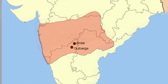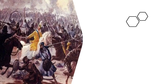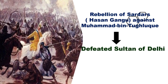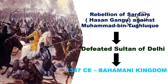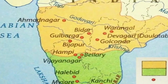Here you can see a map of India in which the Bahamani Kingdom is highlighted. While Mohammed bin Tughlaq was still reigning, some of his sardars in the Deccan rose in rebellion against him. The leader of these sardars, Hasan Gangu, defeated the army of the Sultan in Delhi. A new kingdom known as the Bahamani Kingdom came into existence in 1347 CE. Hasan Gangu became the first sultan of the Bahamani Kingdom. He made the city of Gulbarga in Karnataka his capital.